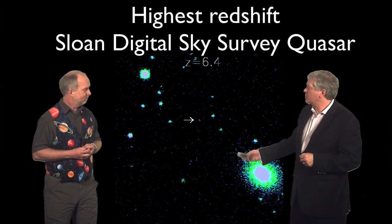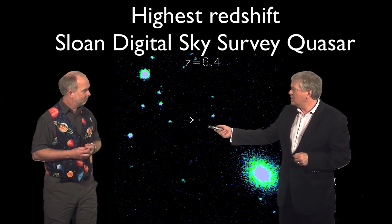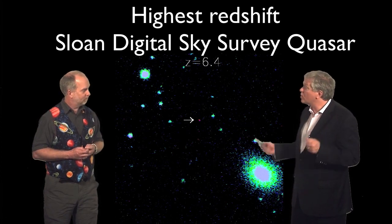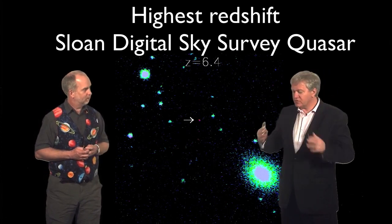Right. So, alright, so they found this one at 6.4. I know there were ones, they found lots and lots of quasars in the Sloan Digital Sky Survey. Were there enough to cause the universe to be re-ionized?